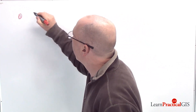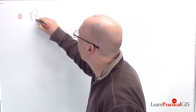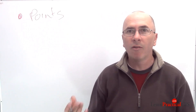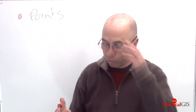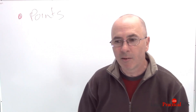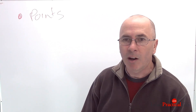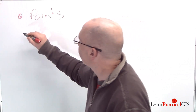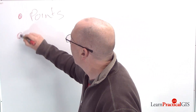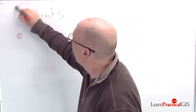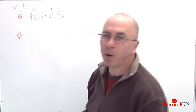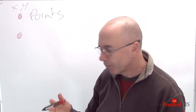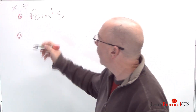Points. These might be power poles, rubbish bins, or spotting a little critter in the field or whatever. A point is an XY coordinate — it might be a lat/long or some other coordinate system.